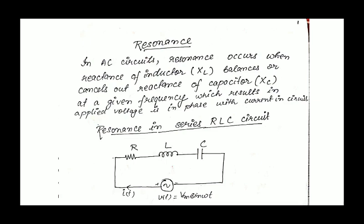Resonance occurs at a particular given frequency which is called the resonant frequency. Here we have a series RLC circuit to which we are giving an AC voltage Vm sin(ωt), and some current I(t) is flowing through it.